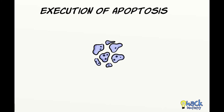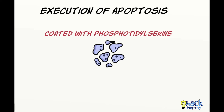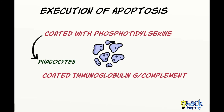Apoptotic bodies are coated with a phospholipid called phosphatidylserine, which is recognized by phagocyte receptors. Also, apoptotic bodies may be coated with opsonins like antibody IgG or complement proteins like C3b, which are recognized by phagocytes, thus facilitating rapid phagocytosis of apoptotic bodies.